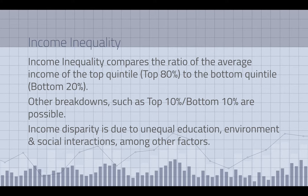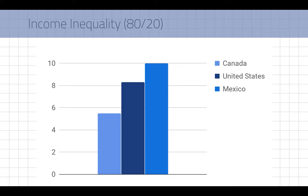Sometimes data can even give you top 10% to bottom 10%. Here is an example — Mexico has the most income inequality: the top quintile has about 10 times the income of the bottom quintile. The US still has a large gap between the top 80th percentile and the bottom 20th. Canada is not as bad as the other two — it's a little more equal.